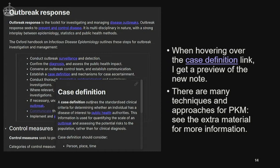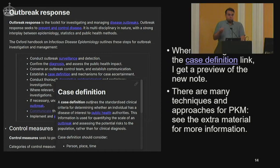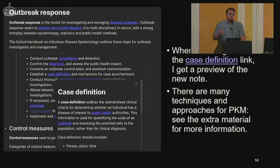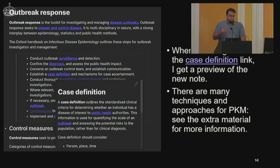This idea of having one note represent only one thing — an idea or a concept — is a philosophy of making notes atomic. You can see the extra material for information on atomic notes. There are also methodologies that people use, such as evergreen notes, where atomic notes are one of the foundations of that approach.